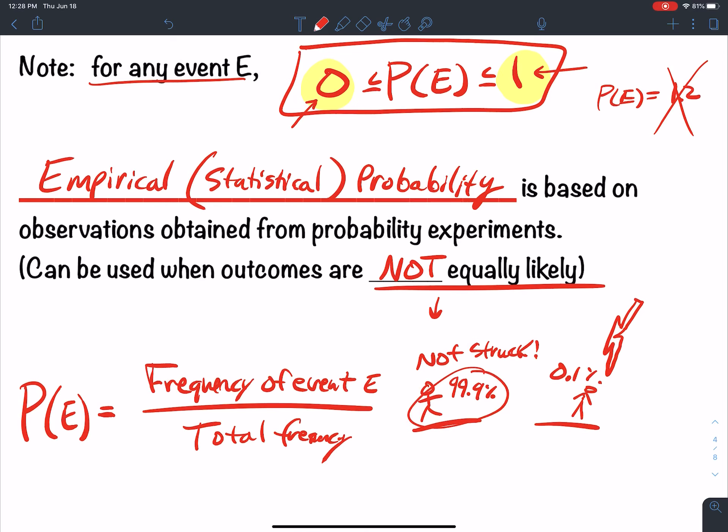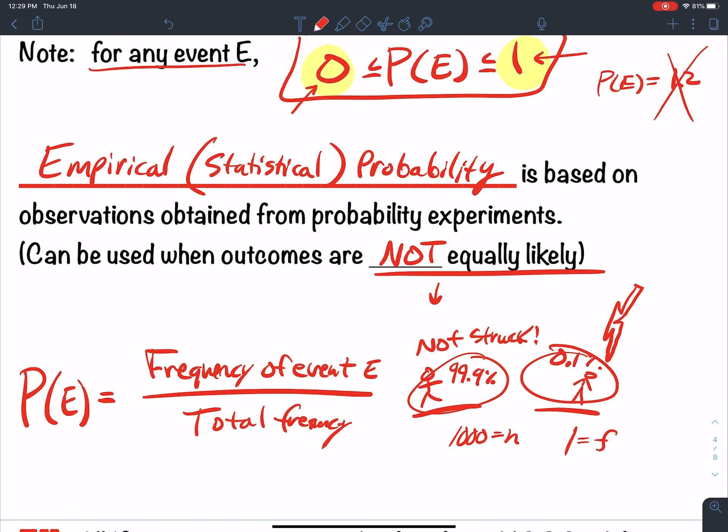So maybe, you know, how in the world did I get this percentage? Maybe they went out and they asked a thousand people, have you ever been struck by lightning? So total frequency was a thousand. And then one person comes back and says, yeah, I got hit by lightning. So one out of a thousand people got hit by lightning. So what is that? That's one over a thousand, which is 0.001. And if I move the decimal over two times, that gives me 0.1%. So that's the idea there. To get this, I take the frequency divided by the total N.